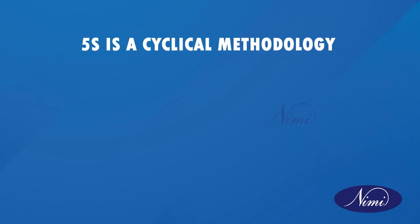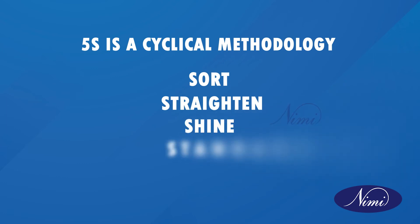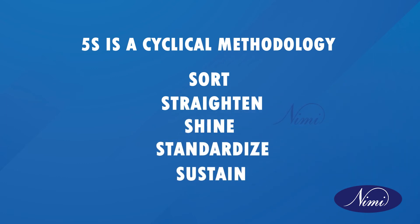5S is a cyclical methodology — sort, straighten, shine, standardize, and sustain — and this cycle results in continuous improvement of the organization. Effective cleanliness is an ongoing operation, not just a one-time cleanup. Regular maintenance will reduce unwanted incidents. Sanitation and neatness play an important role in our day-to-day routines, and it is everybody's responsibility to keep themselves and their surroundings neat, clean, and hygienic.